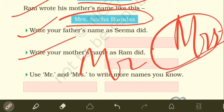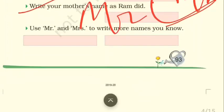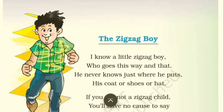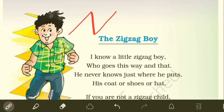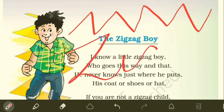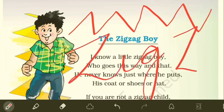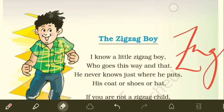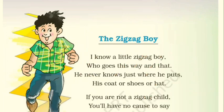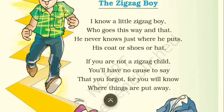The exercises for 'Mr. Nobody' are almost over. Now it's time to read another fun poem called 'The Zigzag Boy.' Zigzag is a pattern that goes back and forth — zig, zig, zag, zig, zig, zag.